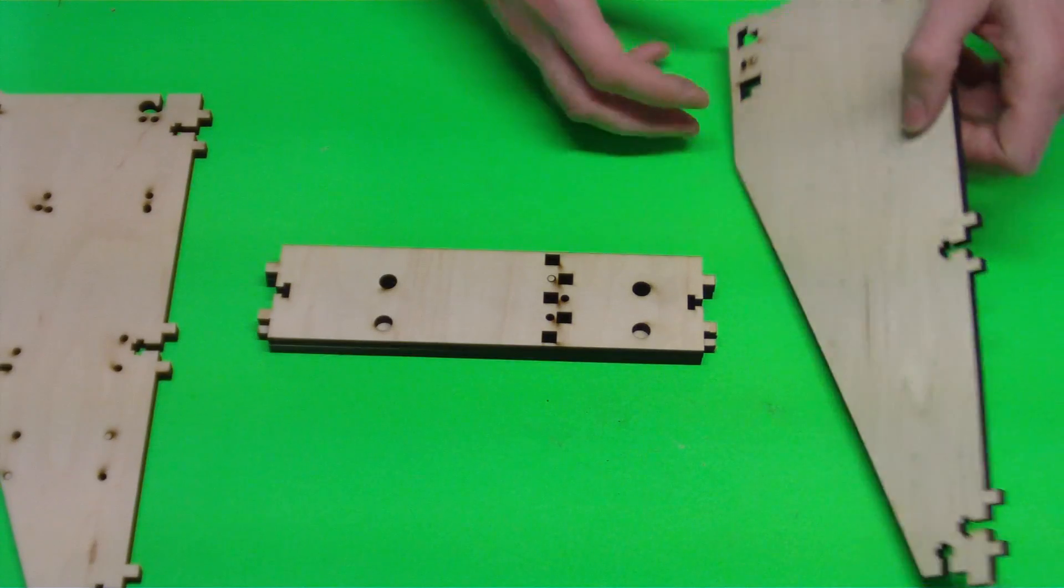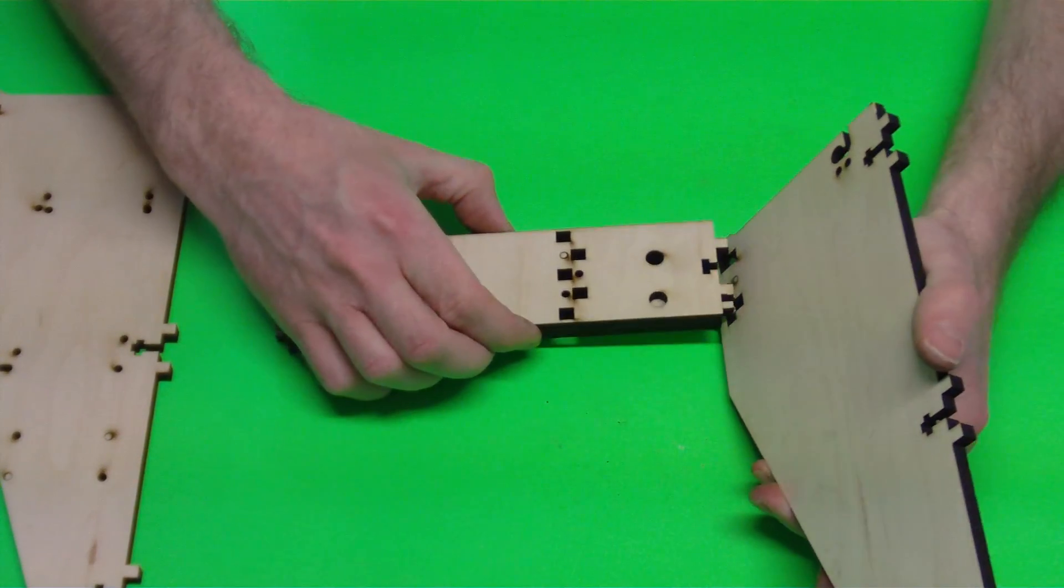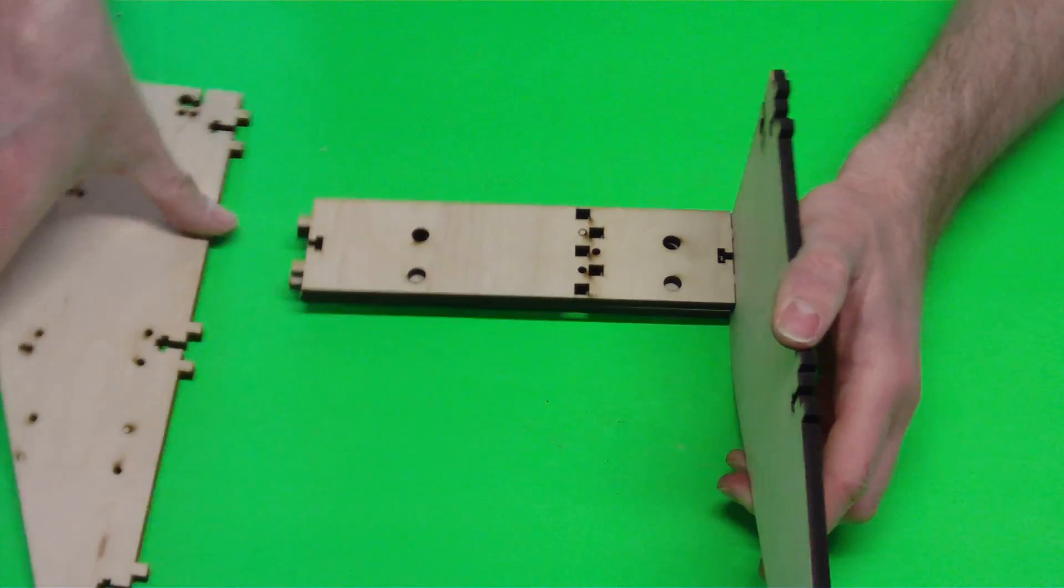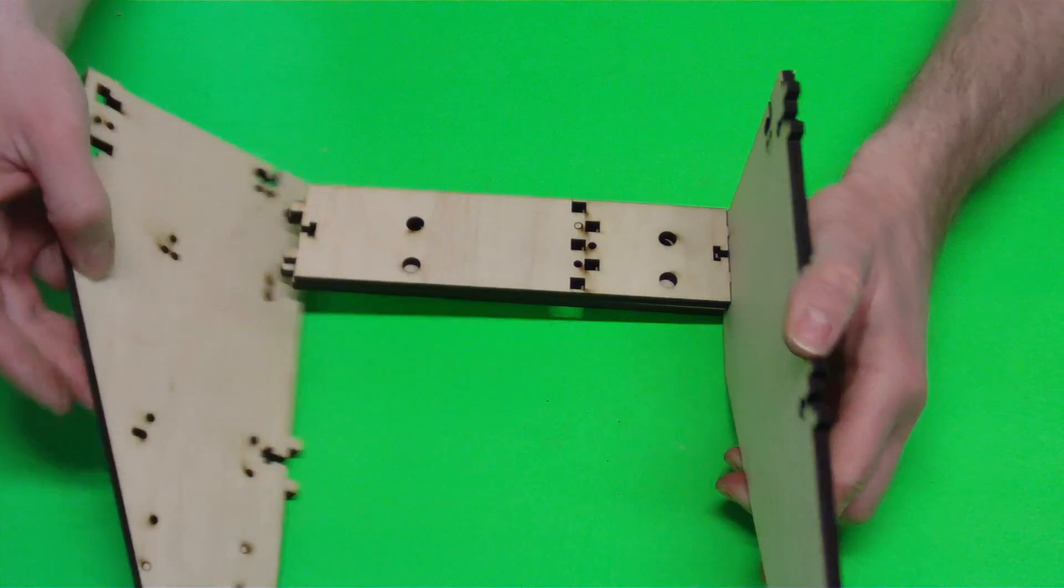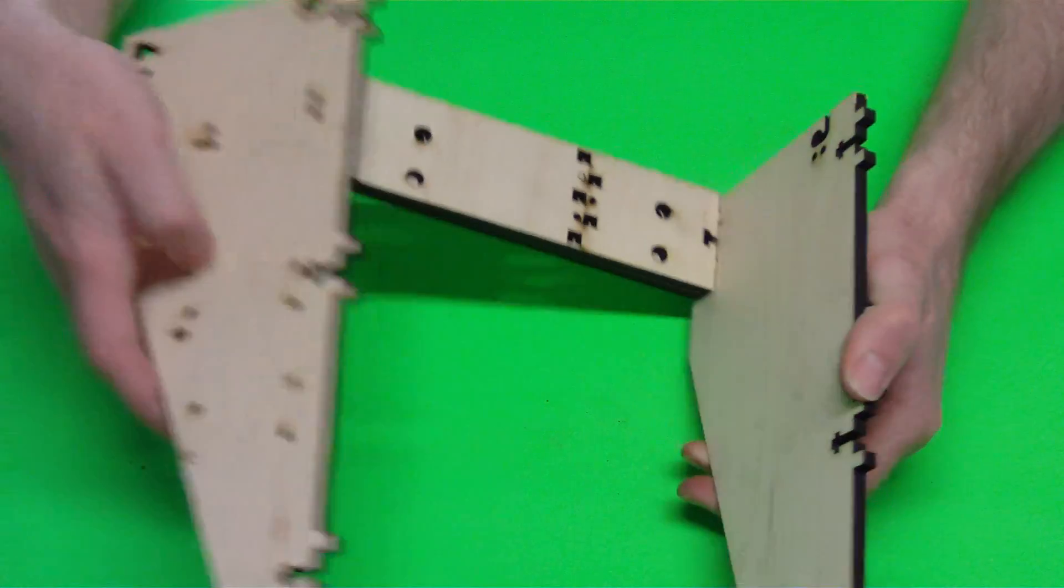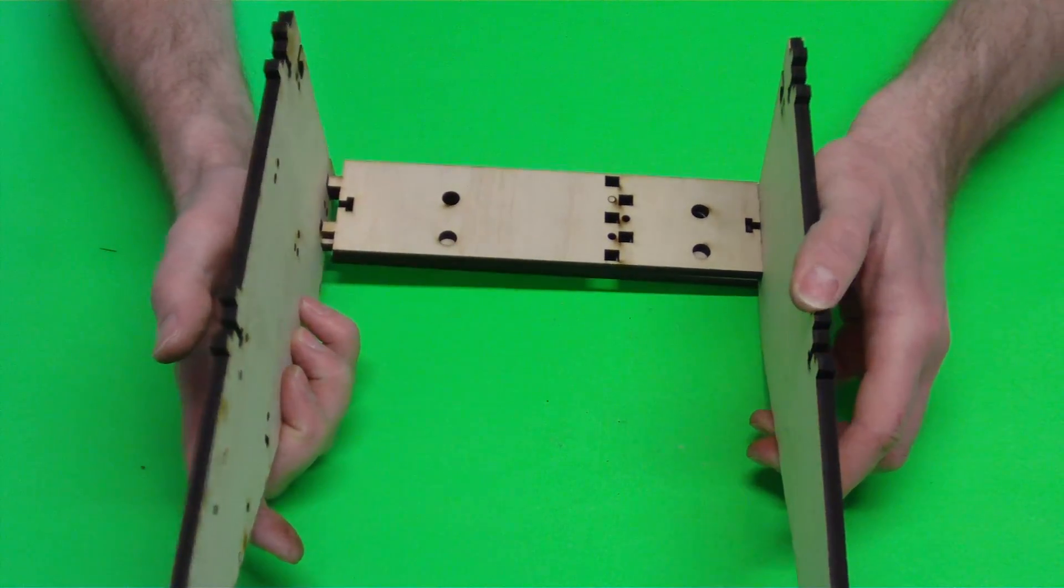So once you put those two on top of each other, then you'll see some little spots in these triangles and you'll just slot right in. Same thing with your other plate. And also, you notice this one has a whole bunch of holes in it. That's to mount our electronics. So that's going to go on our right-hand side.